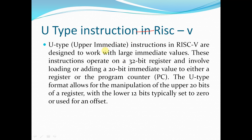U-type instructions, also known as upper immediate instructions in RISC-V, are designed to work with large immediate values. In the case of normal I-type instructions like load instructions, we can store only 12 bits of data. But with U-type instructions, we can store larger data sizes. These instructions operate on a 32-bit register and involve loading or adding a 20-bit immediate value to either a register or the program counter.